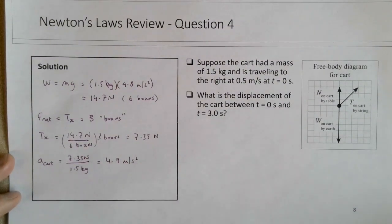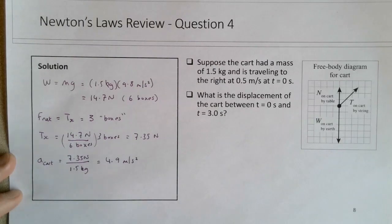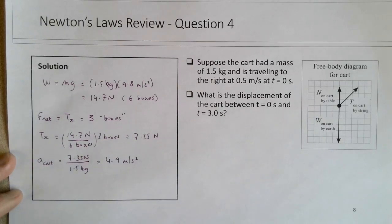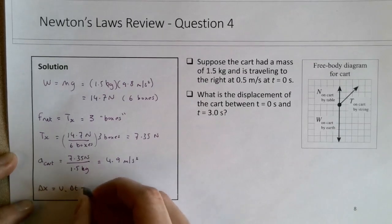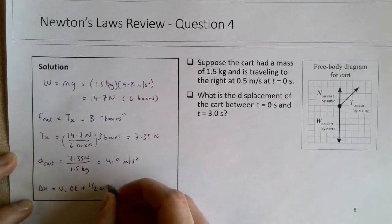Then to solve for delta x, we think of the constant acceleration kinematics, so delta x will be vi delta t plus one half a delta t squared.